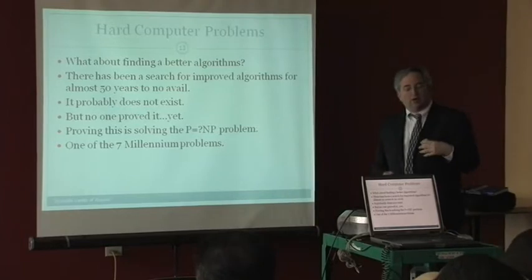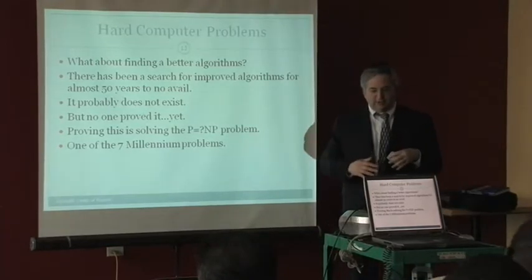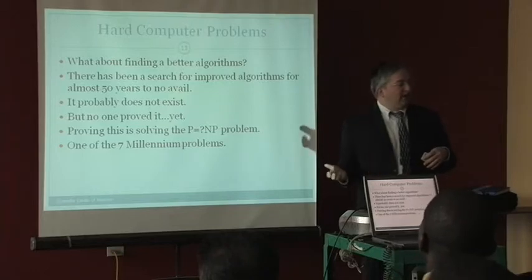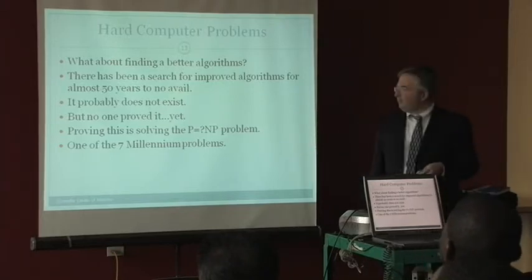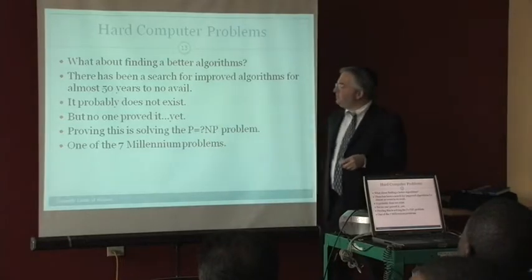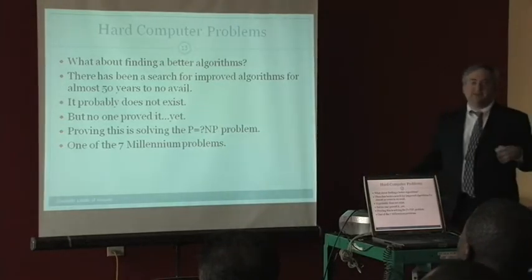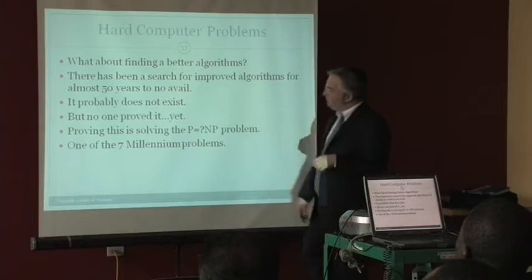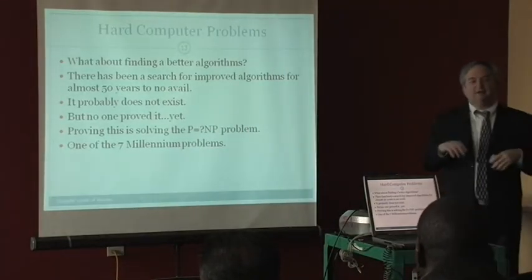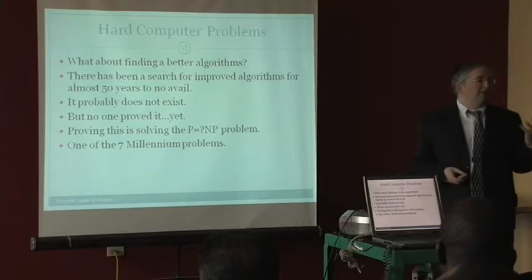This is a very strange thing. So, we don't have a better algorithm, but we can't prove that one doesn't exist. Yet. And proving this is called solving that P is equal to NP problem. And it's one of the seven millennium problems. The seven problems in math that were taken in 2000, and if you solve any of them, you get a million dollars.